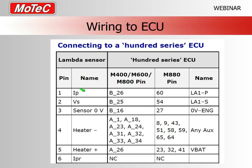For lambda one on an M400/600/800 ECU, the IP (pump current) goes to pin B26; on an M880 it's pin 60, named 'Lambda 1 Pump P.' The sense voltage connects to 'LA1 Lambda 1 Sense.' The heater minus (auxiliary output) can go to A1, A23, A31, A33, or any spare auxiliary output. Heater plus goes to battery power — on an M800 that's A26, the main power feed — splice into that wire.